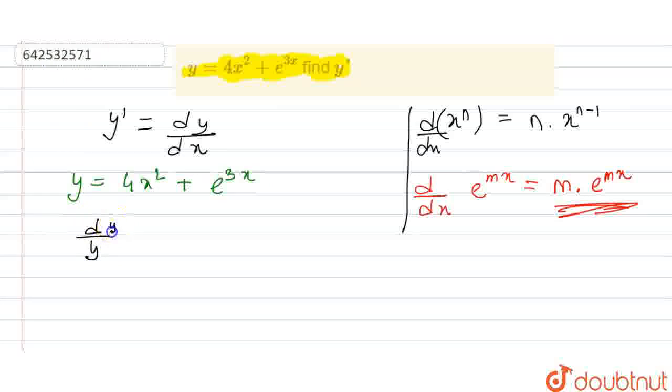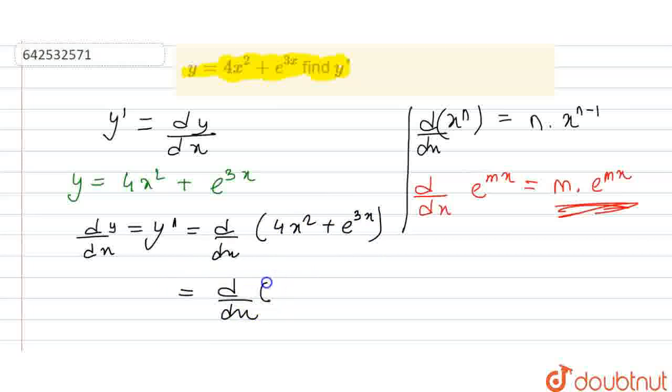dy/dx is equal to y dash. And this will be d/dx of 4x square plus e to the power of 3x. And this is equal to d/dx of 4x square plus d/dx of e to the power of 3x.